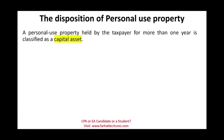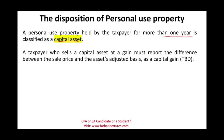If you dispose of personal use property held for more than one year, it's classified as a capital asset and subject to capital gains tax. If held less than one year and you have a gain, it's considered ordinary income. A taxpayer who sells a capital asset at a gain must report the difference between the sale price and adjusted basis as a capital gain.